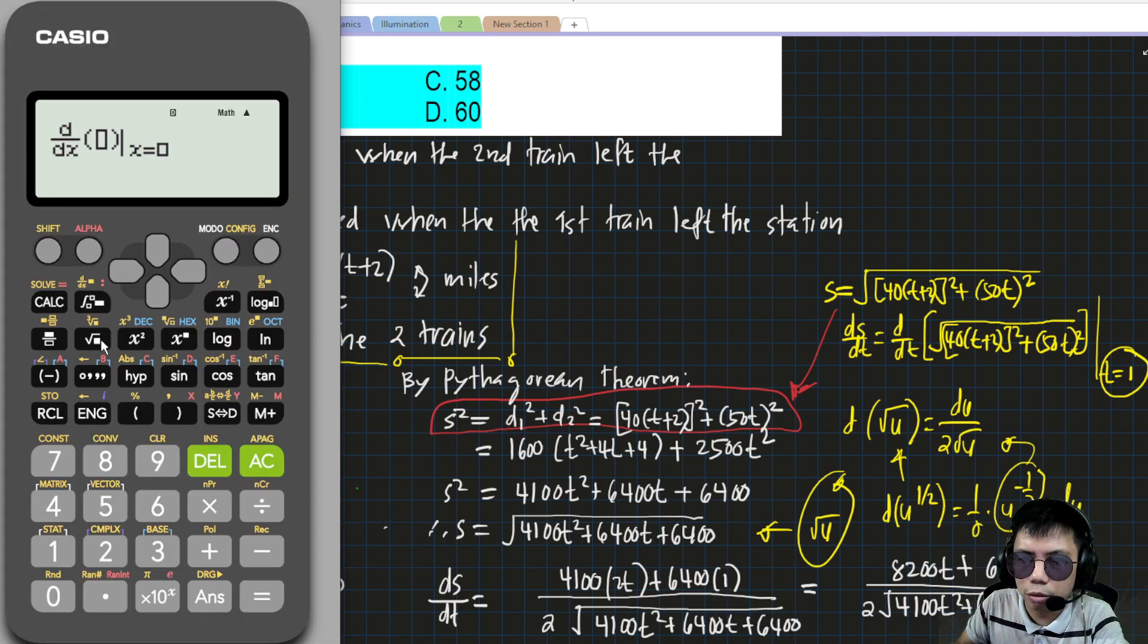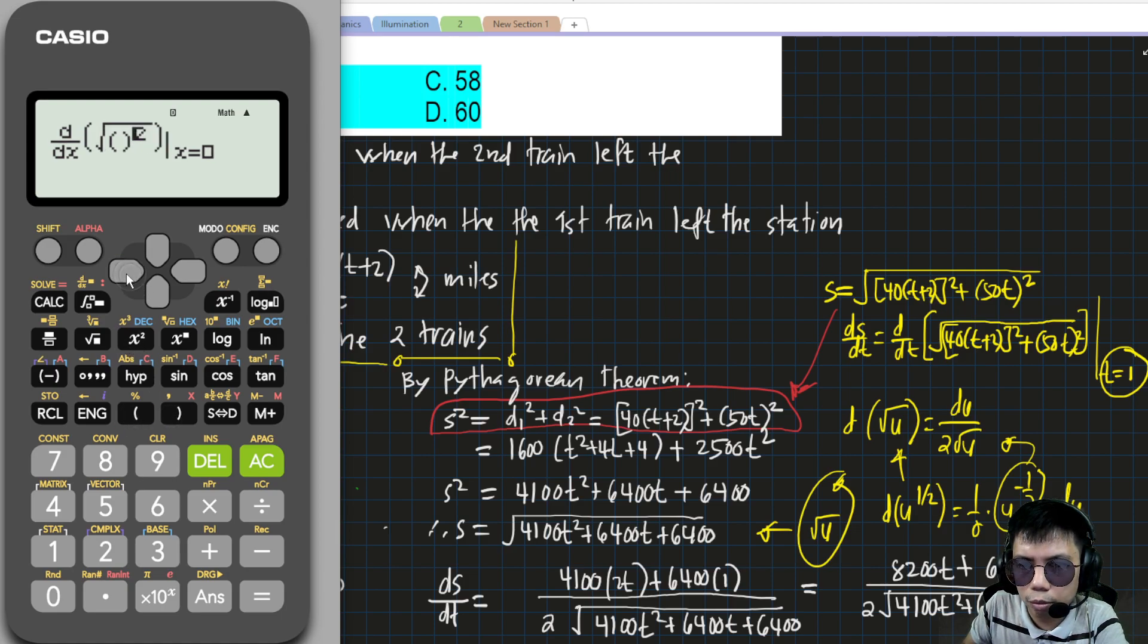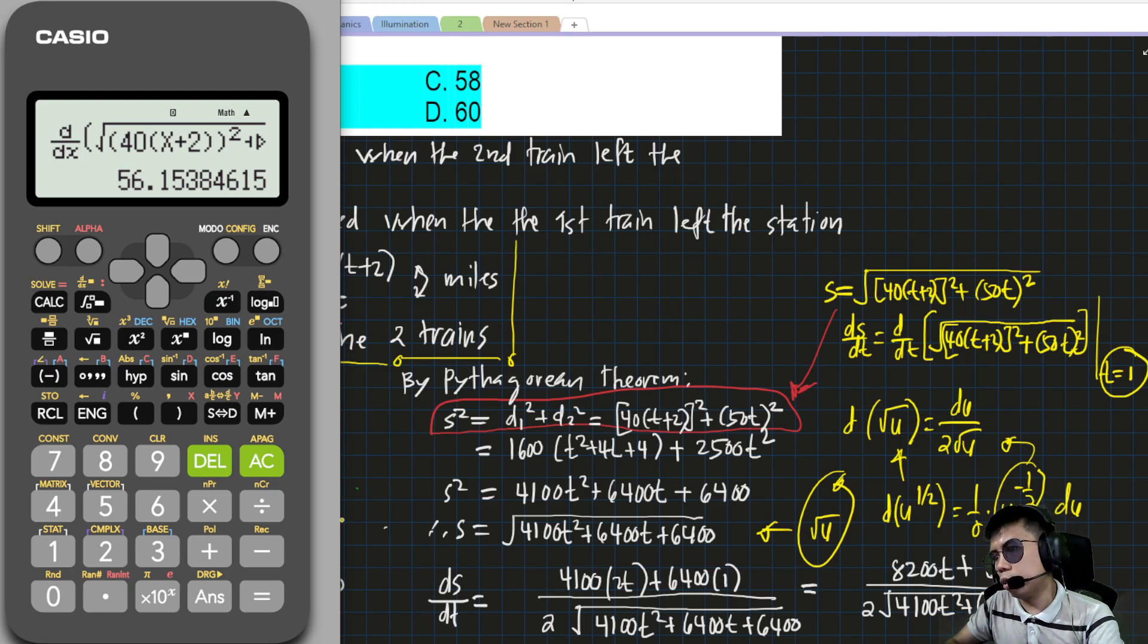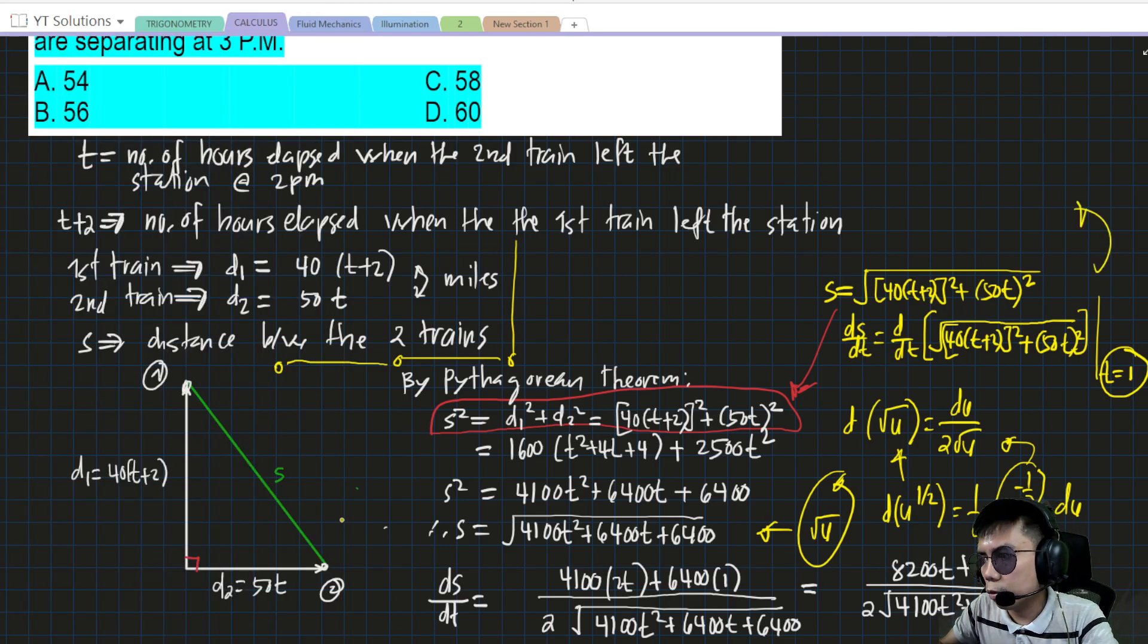So in the calculator, enter d/dx of √[(40(x+2))² + (50x)²] and evaluate when x = 1.